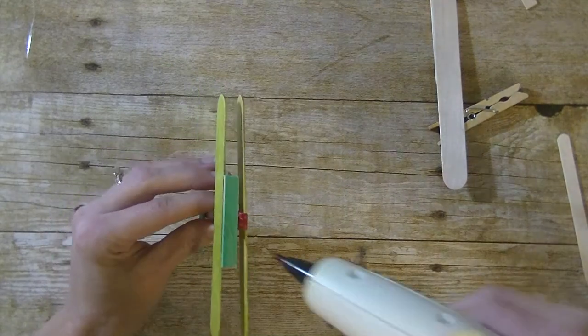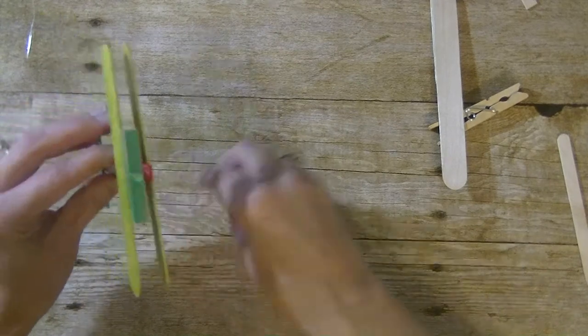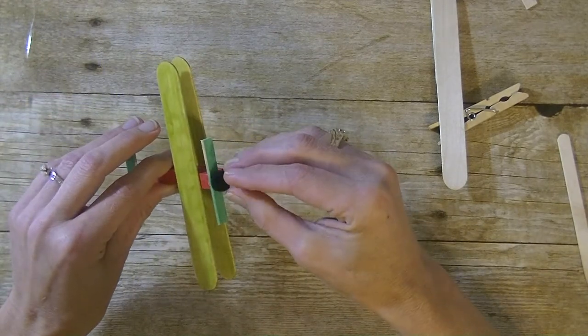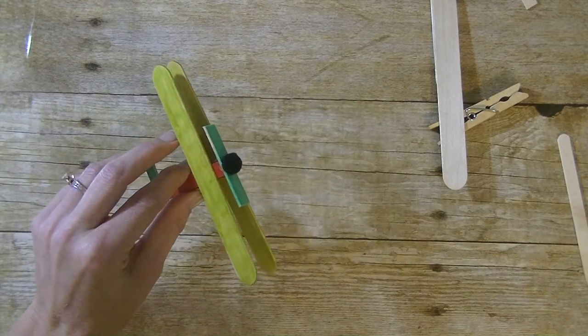Lastly, we're going to take a little bit more glue on the front and stick a pom-pom in there. Again, you can use a wooden bead, a pom-pom, or a button. I love that all these things you're able to pick up at the dollar store.